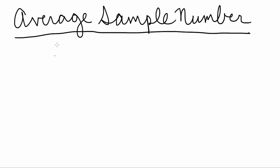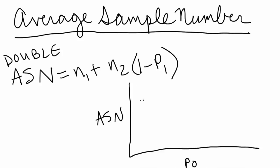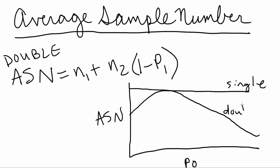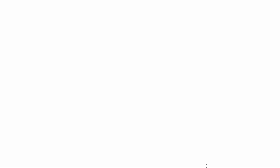The average sample number gives us another way to evaluate sampling plans. This tells us how many samples will be required for different types of sampling plans. We plot the average sample number on the y-axis against the same x-axis of percent non-conforming. There are different formulas for double, multiple, and sequential sampling plans, but no formula is needed for the single acceptance sampling plan because the average sample number will always be the same. This gives us a useful way to determine what's the best sampling plan for the resources we have available.